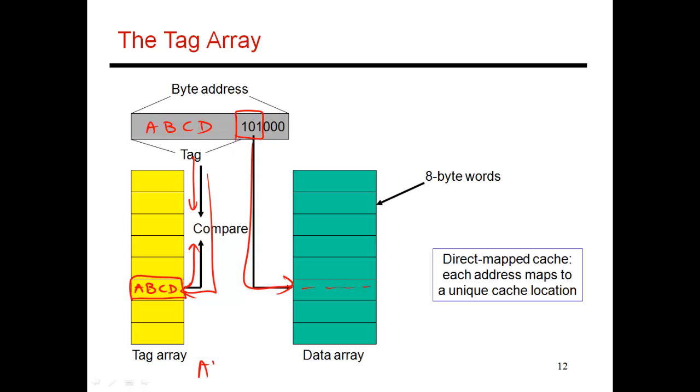Instead, if I had been looking for data ABCC 101000, I would use 101 to look up this entry. I would do a comparison of ABCD and ABCC, and I would discover that what is stored in the cache is not what I'm looking for. So that would be a cache miss. So then I get the data that I'm really interested in. Maybe I get it in L2 or L3. Bring the data in, put the data over here. And then I fix the tag to say, now what has been stored in the cache is location ABCC 101000.